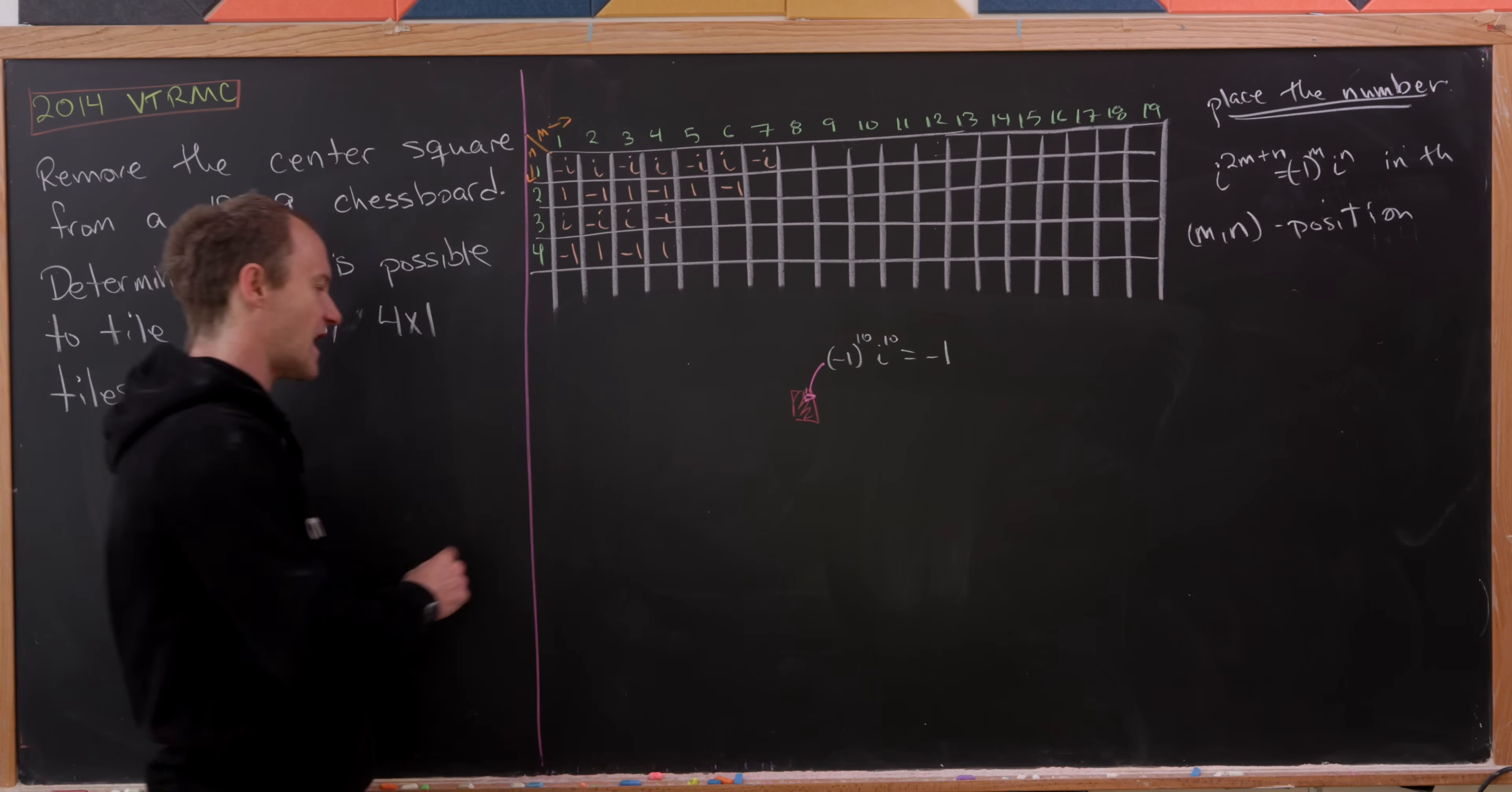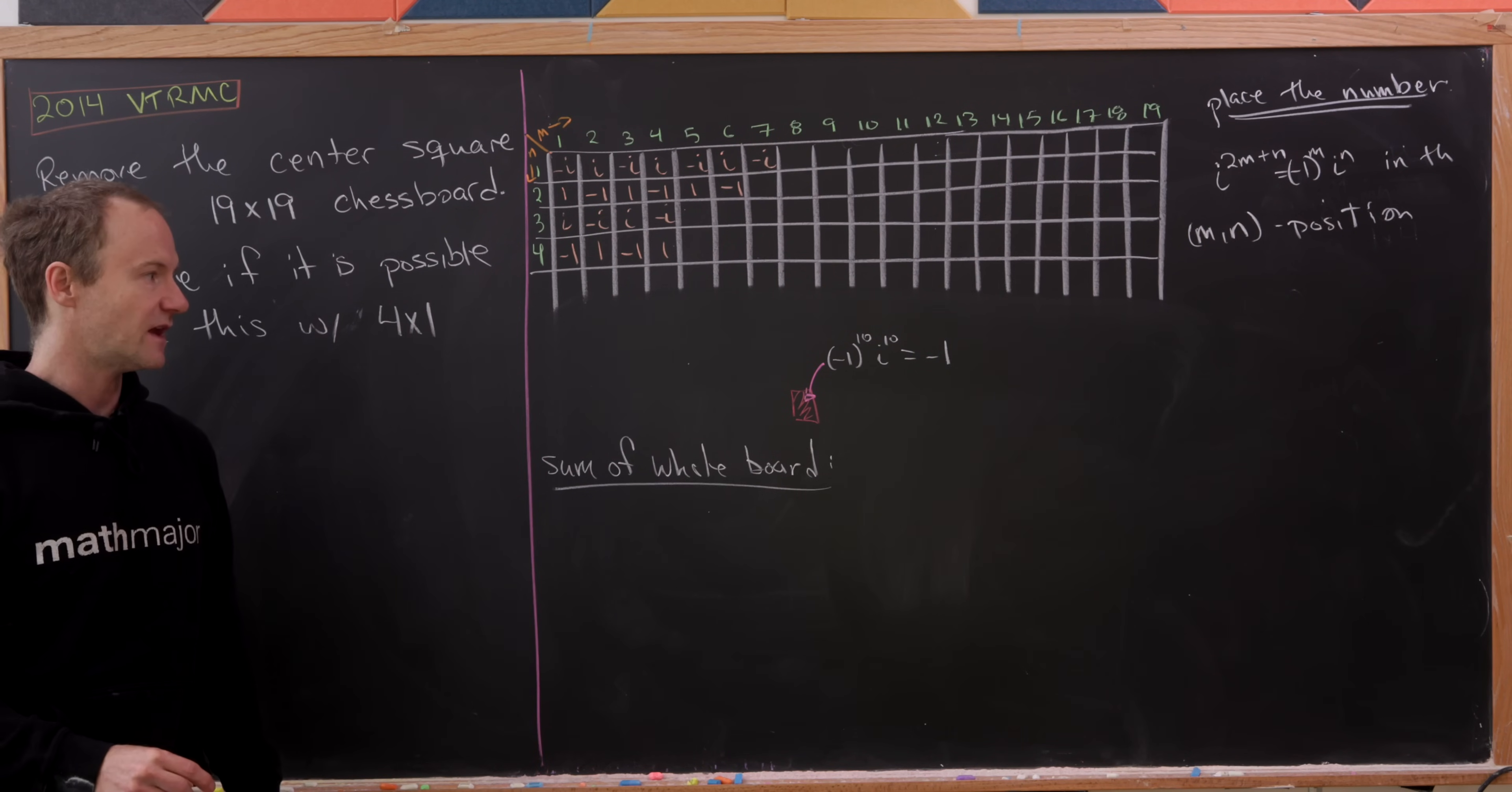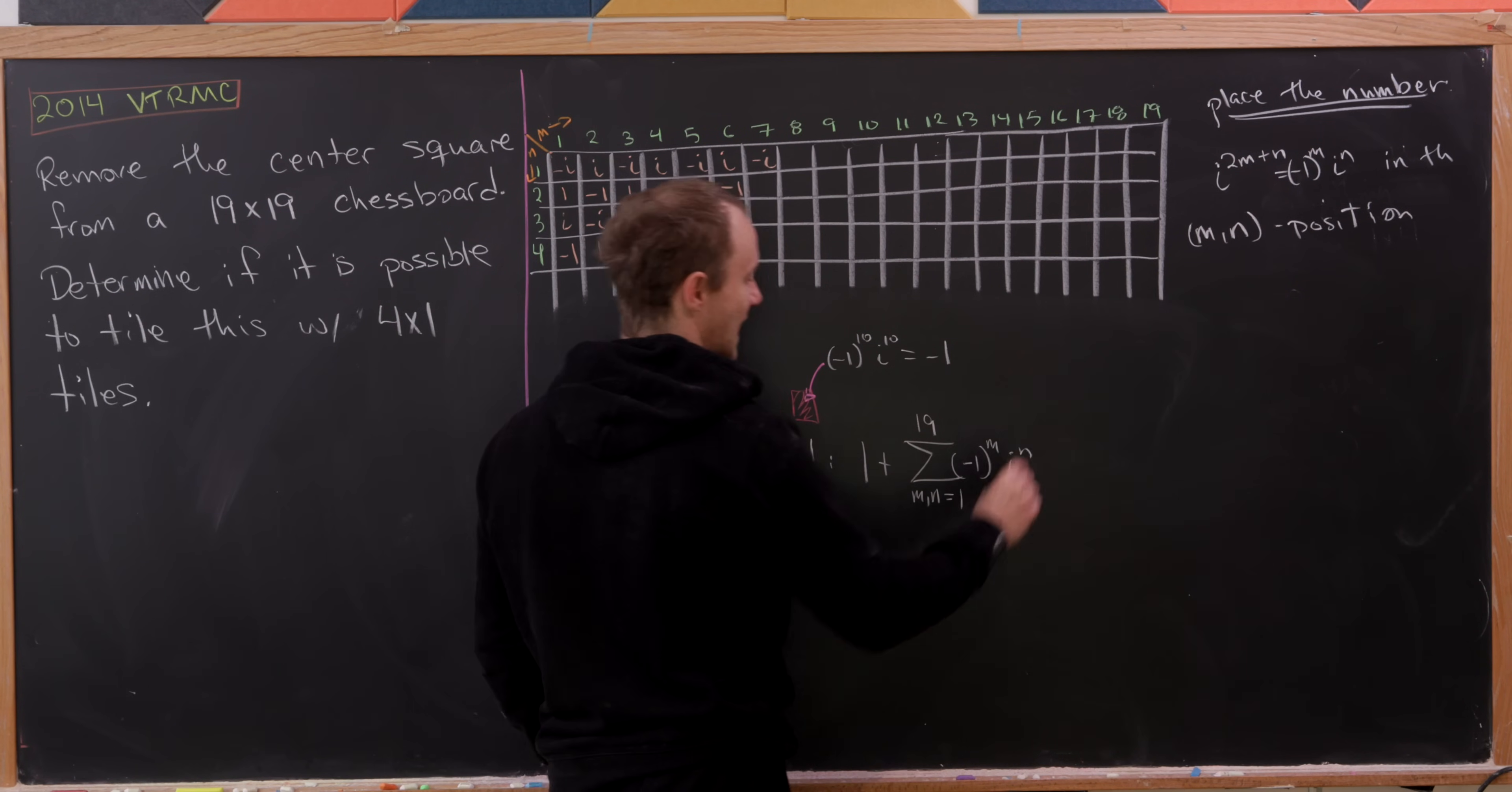So now let's find the sum of the whole board. But of course, we can get that by taking the sum of the whole board unmutilated, without the deleted square, and then subtract off negative 1. In other words, add in the number 1. So that means we're going to have 1 plus, and then we'll have the sum as m and n go from 1 to 19 of minus 1 to the m times i to the n.